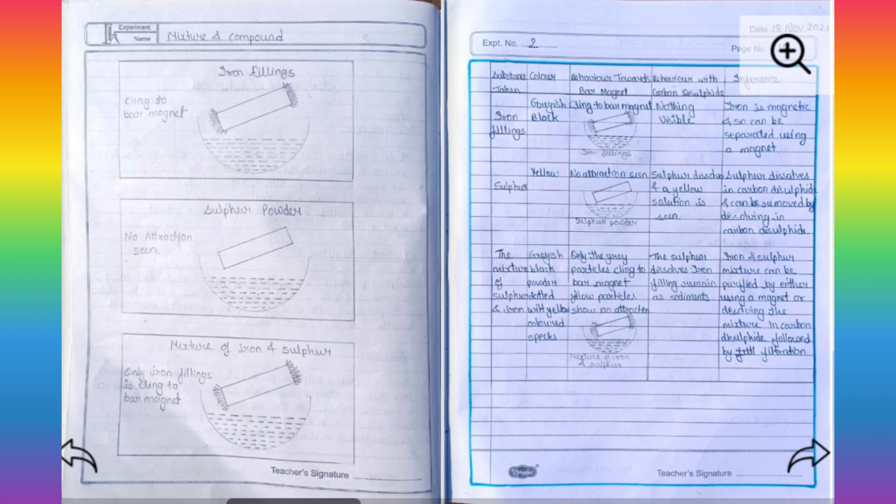Then I draw a table. In the table, diagram is too small. That's why I again draw the same diagram on the plain paper.